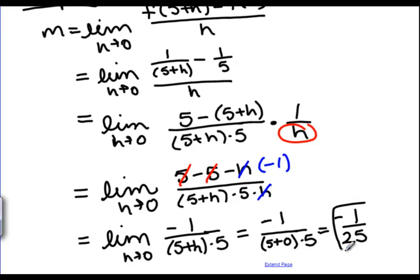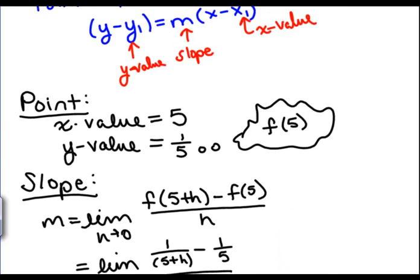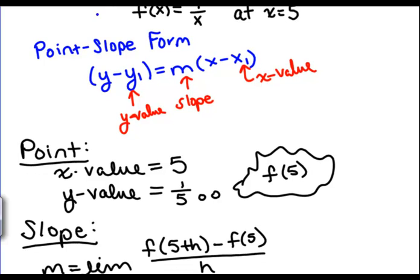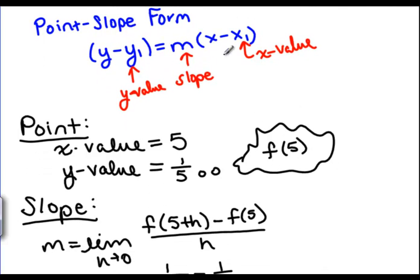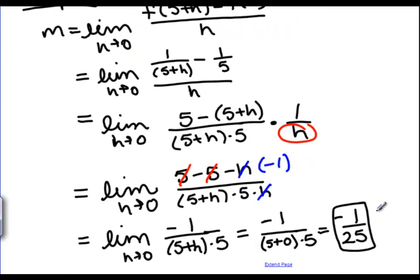So negative 1 over 25 is my slope. And I need to take that all the way back up here to the top to my point slope form of my line. So what I needed, I needed a point and a slope. So I have a point. It's right here. And I need a slope. It's right here.